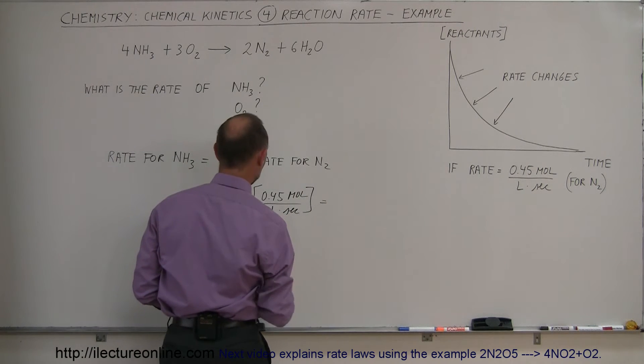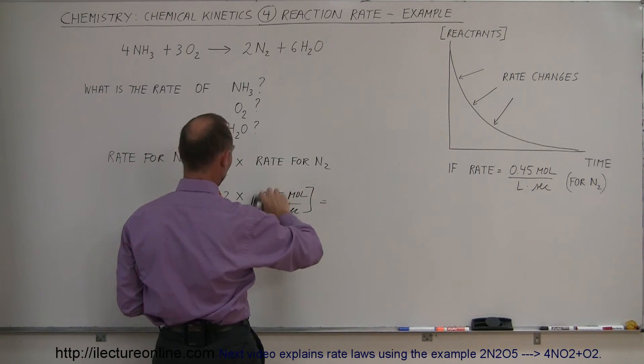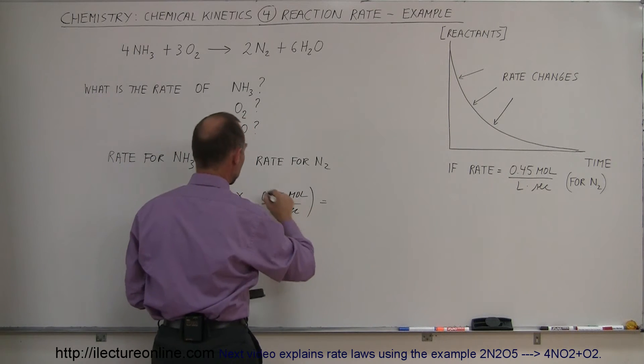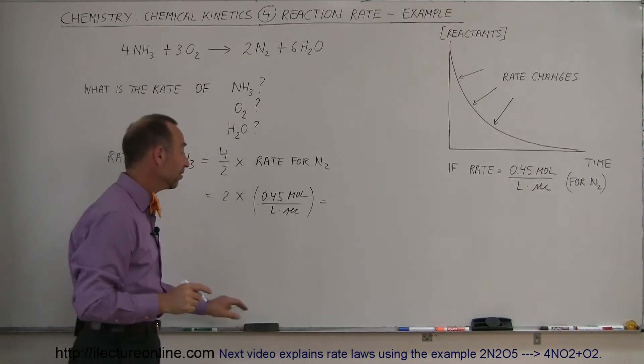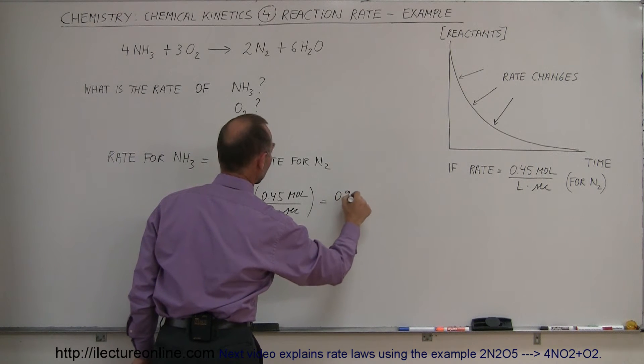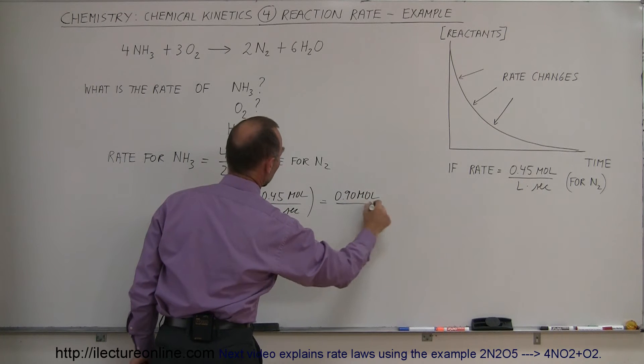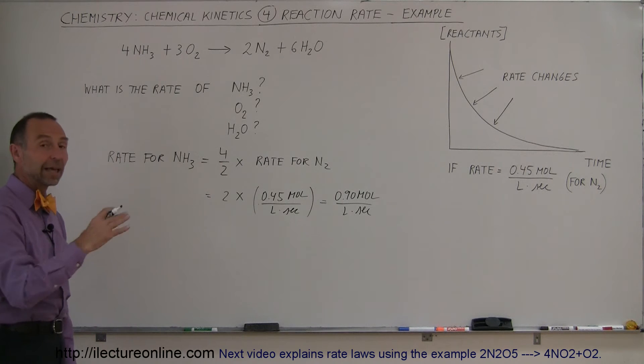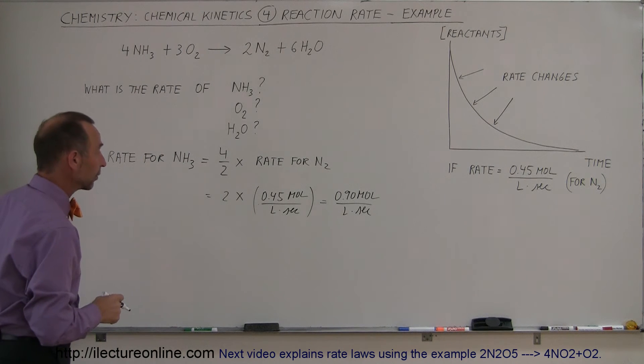So in this case, we can then say that this is equal to 4 divided by 2 or 2 times the rate for nitrogen gas, which in this case is 0.45 moles per liter times seconds. So that would mean that this is equal to - and I really don't have to put this in square brackets, I can put that in parentheses because we're not talking about the concentration in this case - and so 2 times this, that would be equal to 0.90 moles per liter per second. So that's how we calculate the rate for the other products and the other reactants.